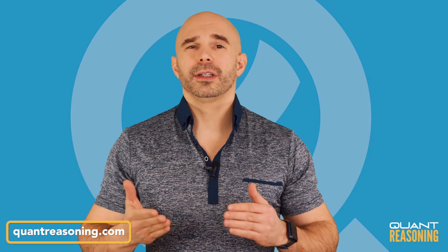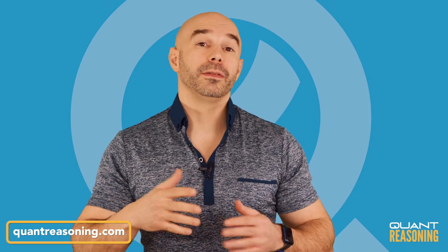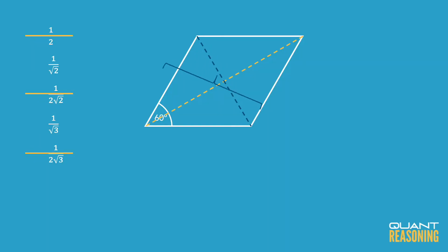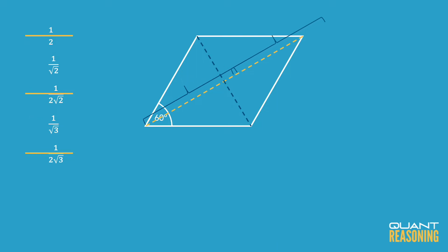Between the remaining two answer choices, I'm wondering: does the long diagonal seem like it's only about 1.4 times the short diagonal — so about 40% longer? Or would I maybe guess that it's closer to twice as long, so maybe like 70% longer, which would be answer choice D? I tried this myself without solving the question first, and I guessed answer choice D because it seemed like it was more than 40% longer, but not quite twice as long.